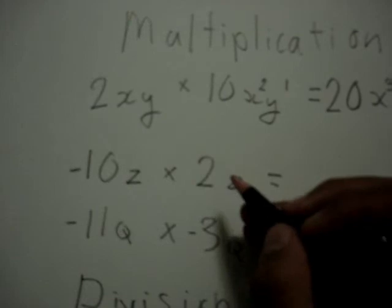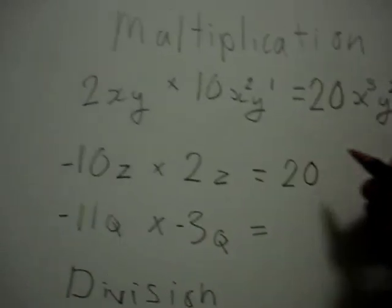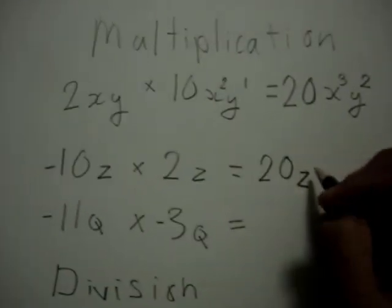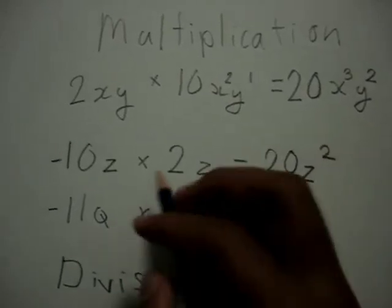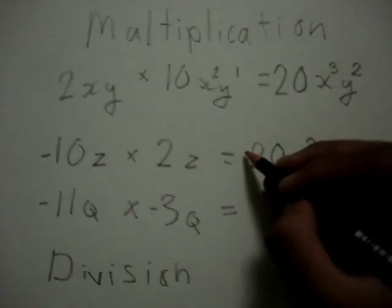Okay, 20, that's the answer for the numbers, then x squared z squared because 1 plus 1 is 2, and minus times positive is minus.